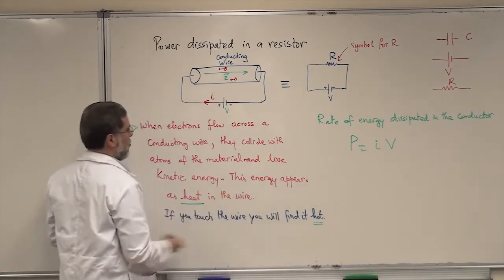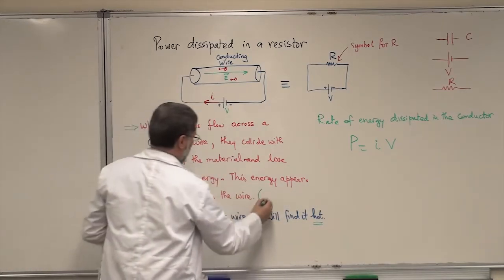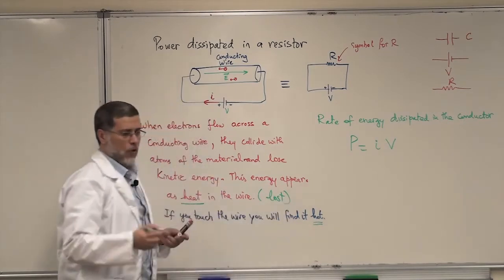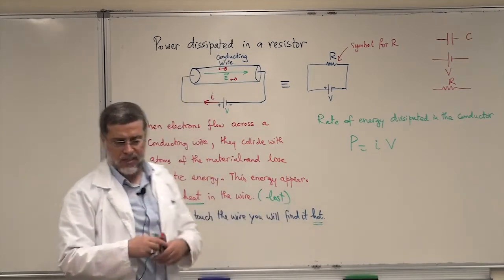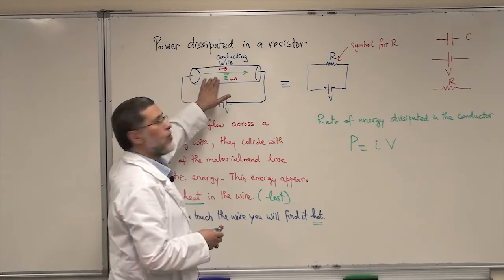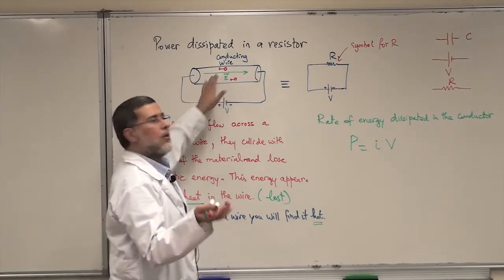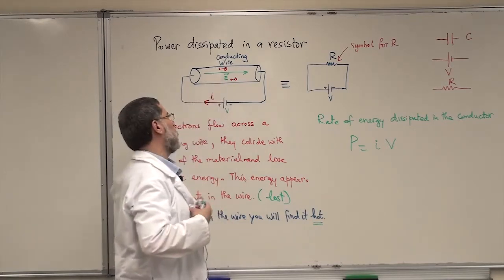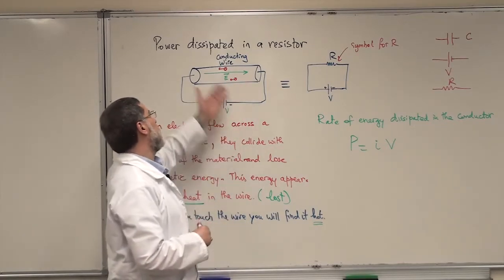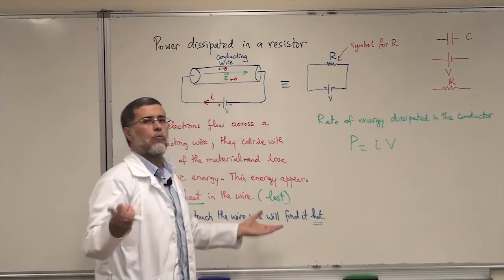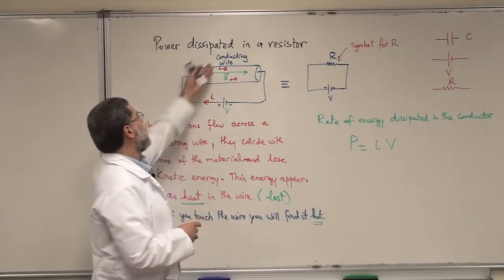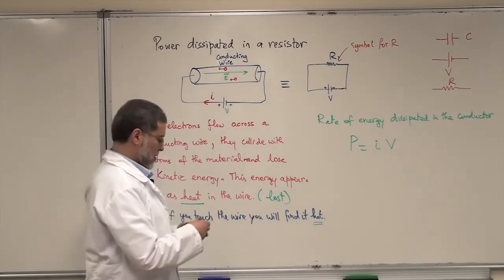This is lost unfortunately because the wire has a resistance. If you don't want to lose any energy, you have to use a superconductor, whose resistance would be zero. But we are not talking about that here — we're talking about normal conducting wires.